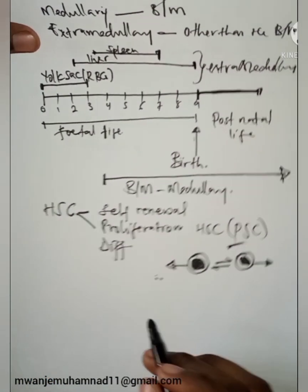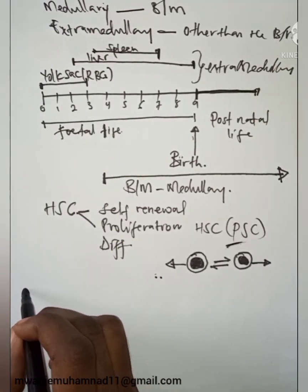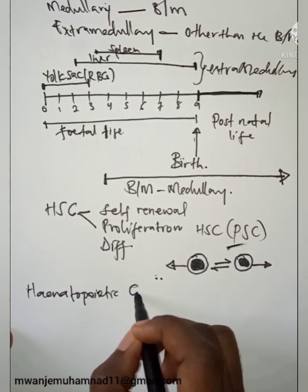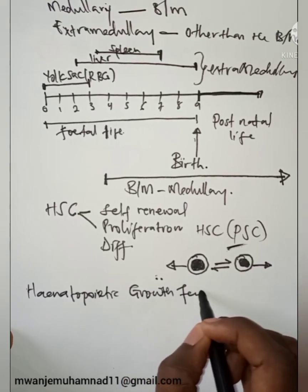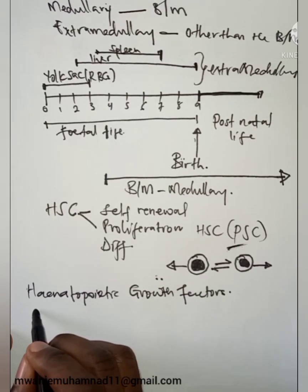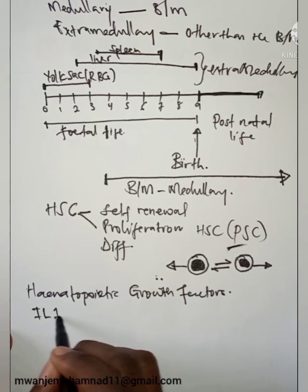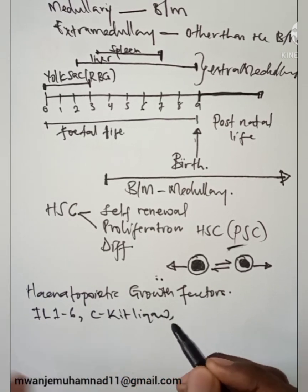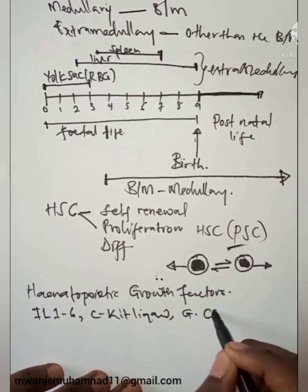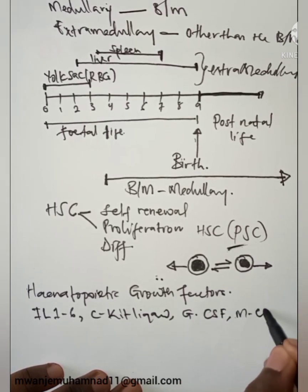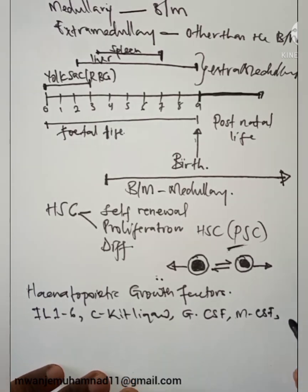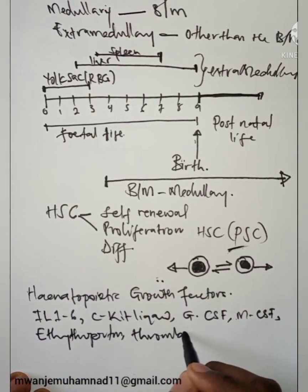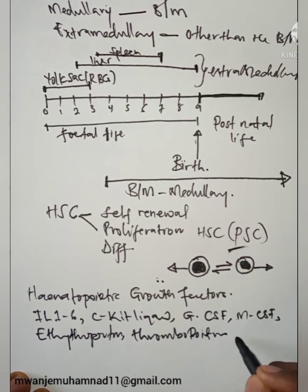This overall process is regulated by what is called the hematopoietic growth factors. These factors include interleukins 1 to 6, we have the CKIT ligand, there is the GCSF, the MCSF, erythropoietin, and more.